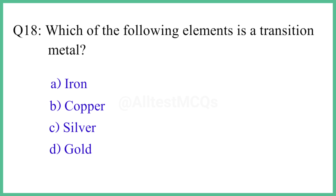Question number 18. Which of the following elements is a transition metal? The right answer is option A: iron.